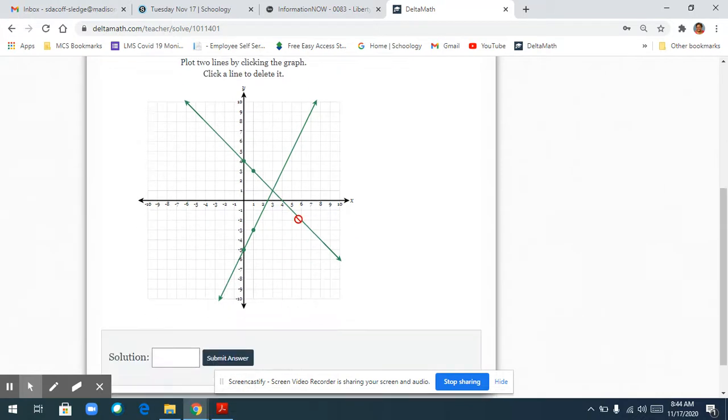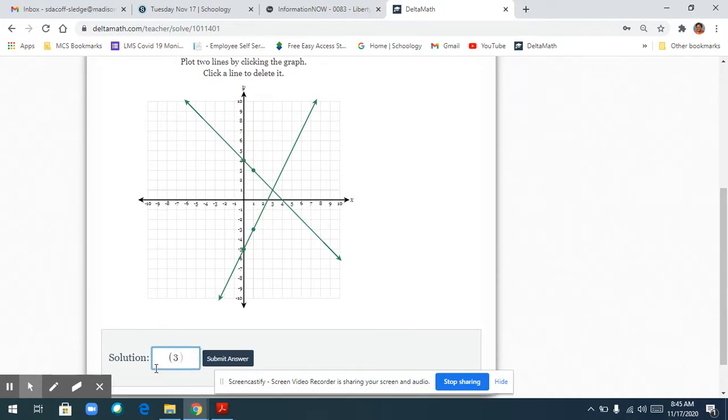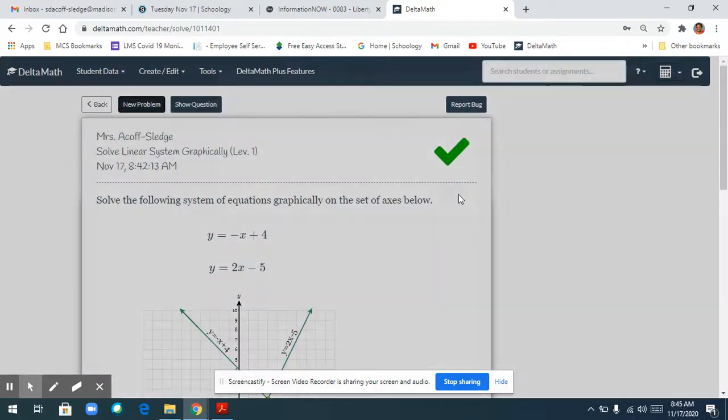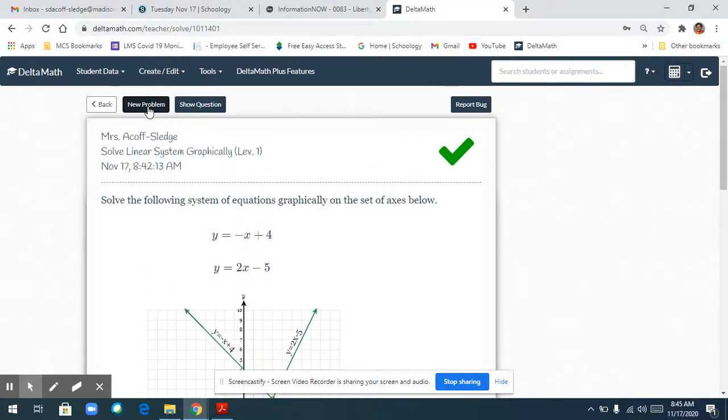Where these lines intersect, that is my solution. I'm going over 3 and up 1, so it's positive 3, positive 1. That should be my solution. Make sure that you write your ordered pair in a set of parentheses or it will mark it wrong. Let's see if I did it right. Yeah, I did it right. Let me do one more.